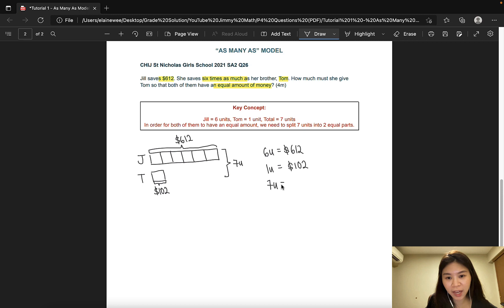Now let's work out how much they have all together. So 102 times 7 would give us $714. For them to have an equal amount of money, we have to split 714 into two equal parts. So 714 divided by 2 and that would give us $357. Since Tom already has $102, the amount of money that Jill has to give Tom is $357 minus 102. And that would give us $255. And that is our answer to this question.